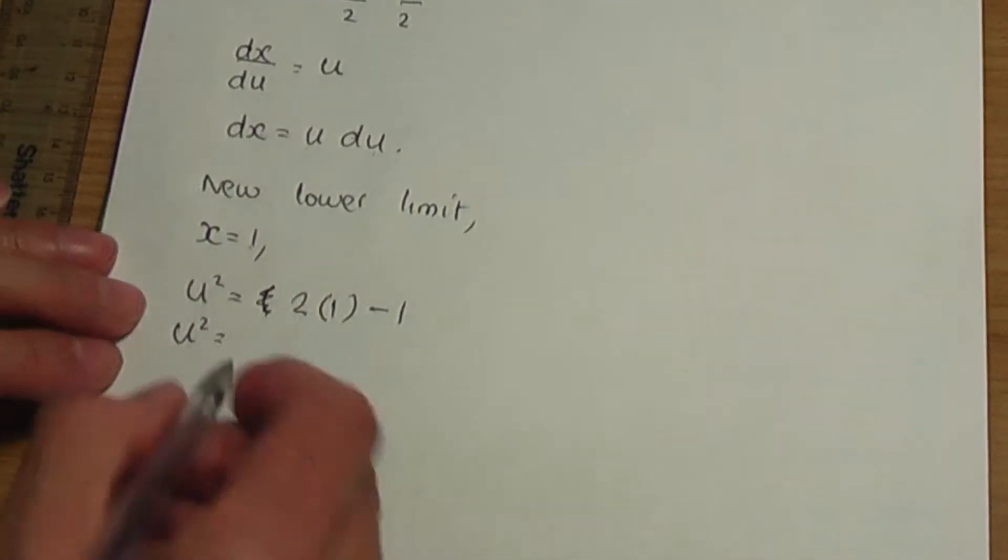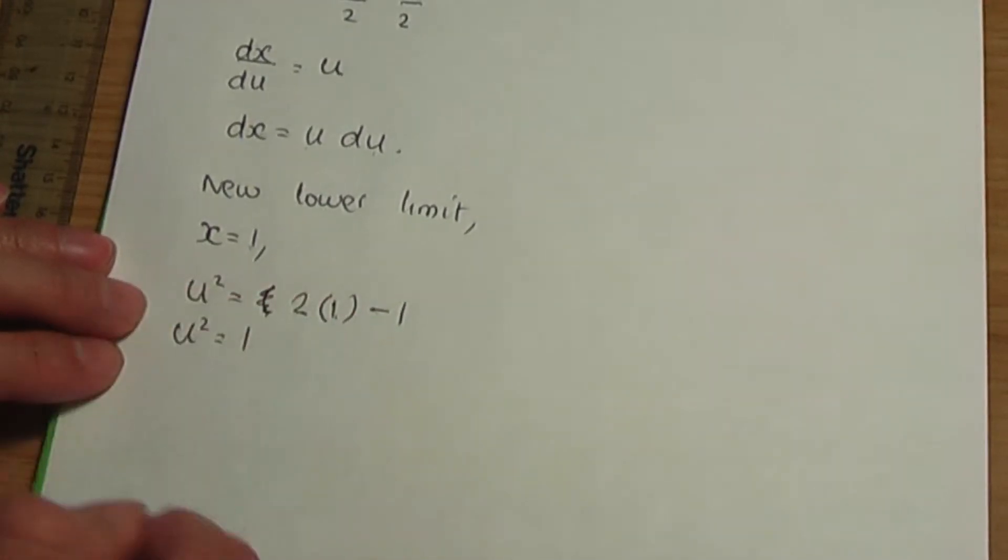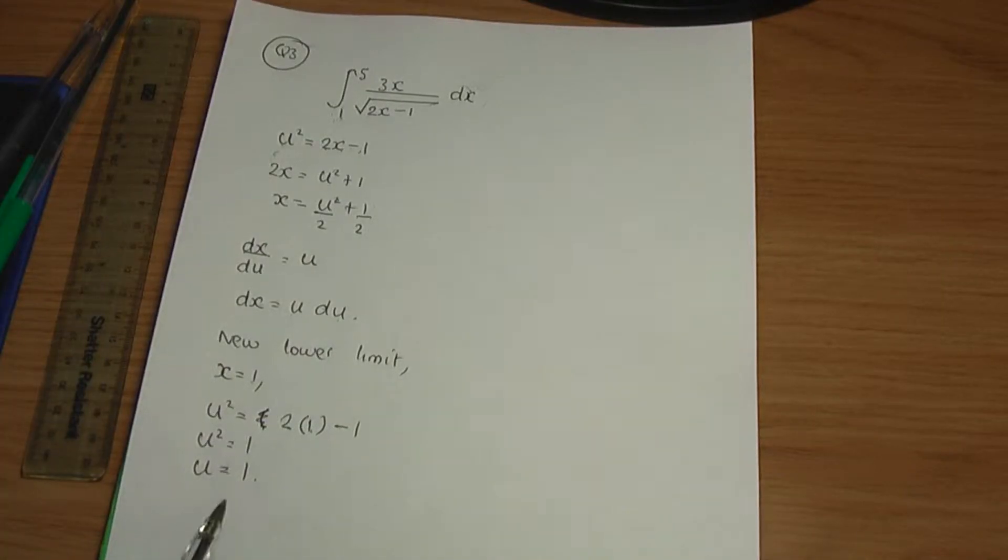When I simplify, u squared will be 2 into 1, which is 2, minus 1, which is 1. So, u will be 1. That is the new lower limit.